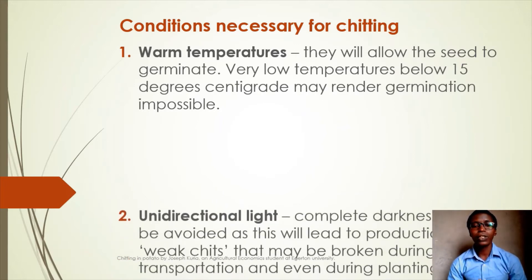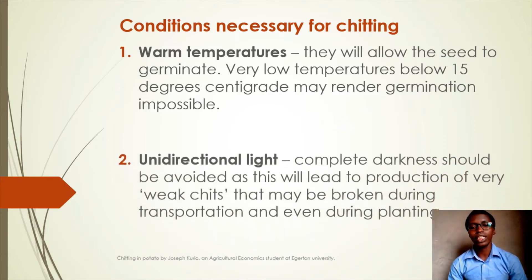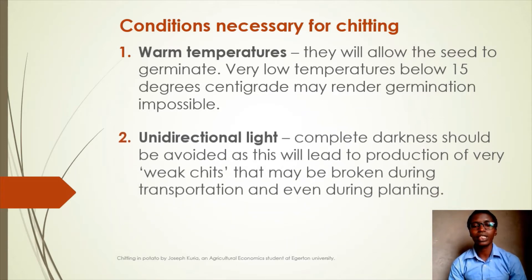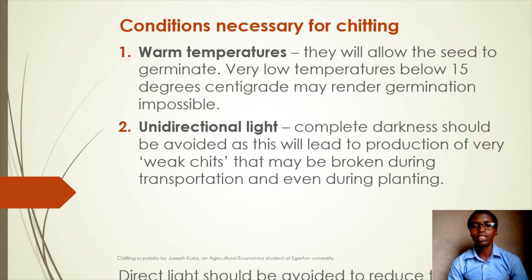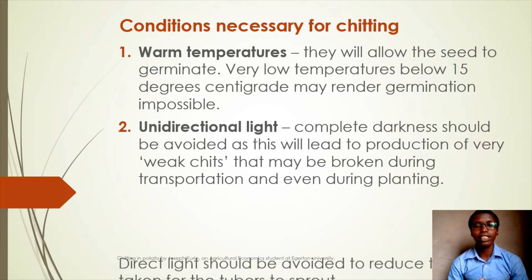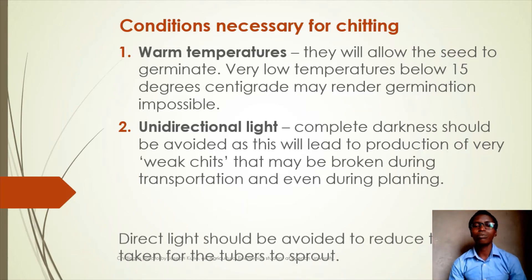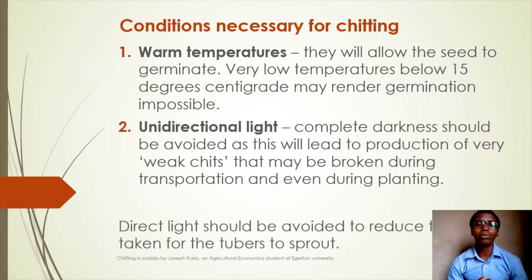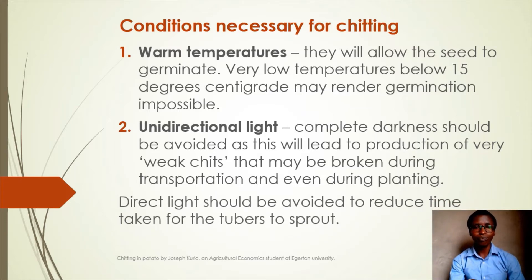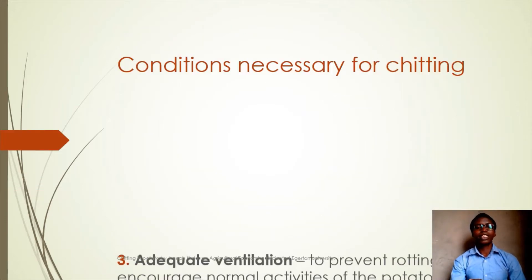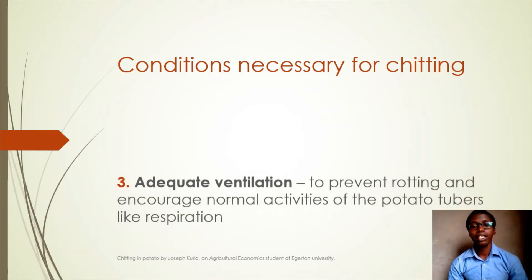Unidirectional light is another condition. Complete darkness should be avoided as this will lead to production of very weak shoots that may be broken during transportation and even during planting. Direct light should also be avoided to reduce the time taken for the tubers to sprout.